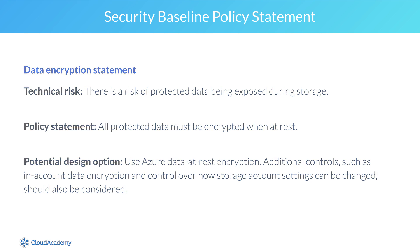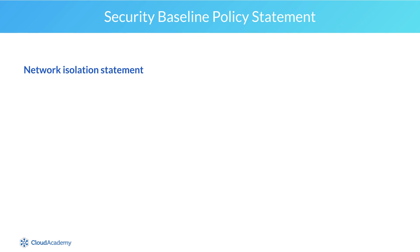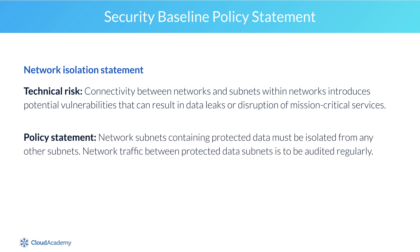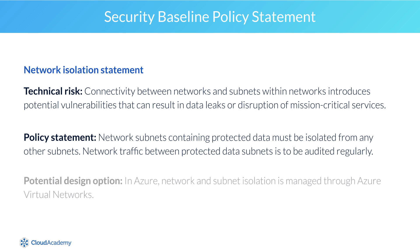A network isolation policy statement could be: Technical risk — connectivity between networks and subnets within networks introduces potential vulnerabilities that can result in data leaks and disruption of mission critical services. Policy statement — network subnets containing protected data must be isolated from any other subnets, and network traffic between protected data subnets is to be audited regularly. Potential design option — in Azure, network and subnet isolation is managed through Azure virtual networks.